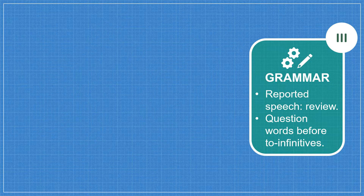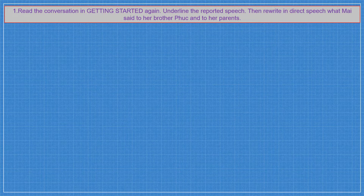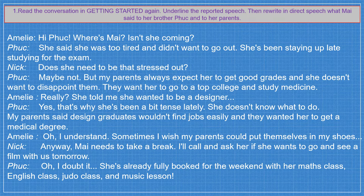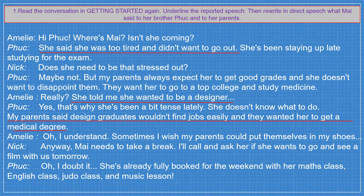Now the last part — Part 3: Grammar. We will review reported speech. Read the conversation in 'Getting Started' again, underline the reported speech, then rewrite in direct speech what Mai said to her brother, folk, and her parents. What is the reported speech? The first one: 'She said she was too tired and didn't want to go out.' 'She told me she wanted to be a designer.' 'My parents said they wanted her to get a medical degree.'